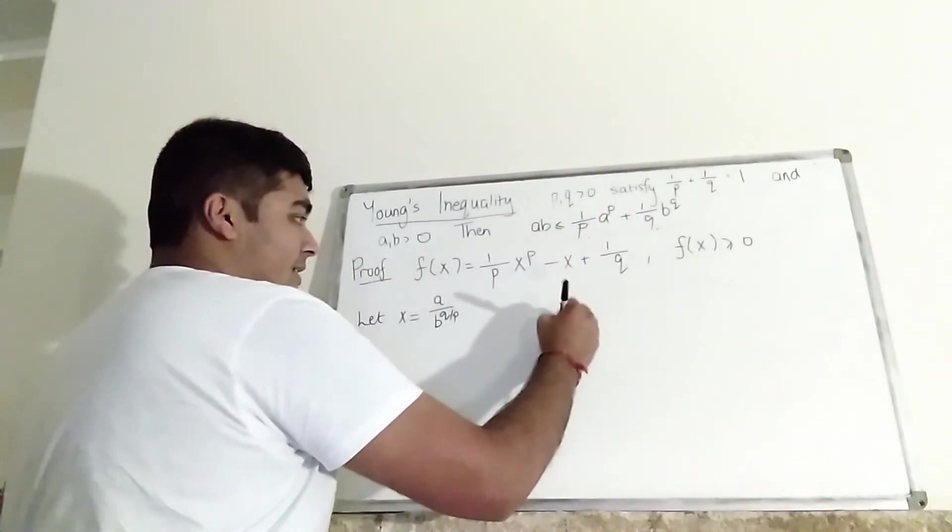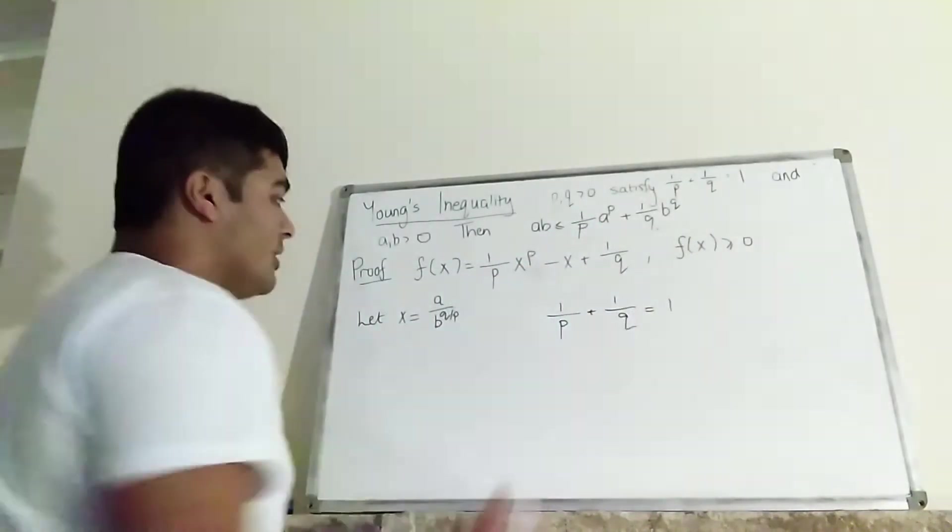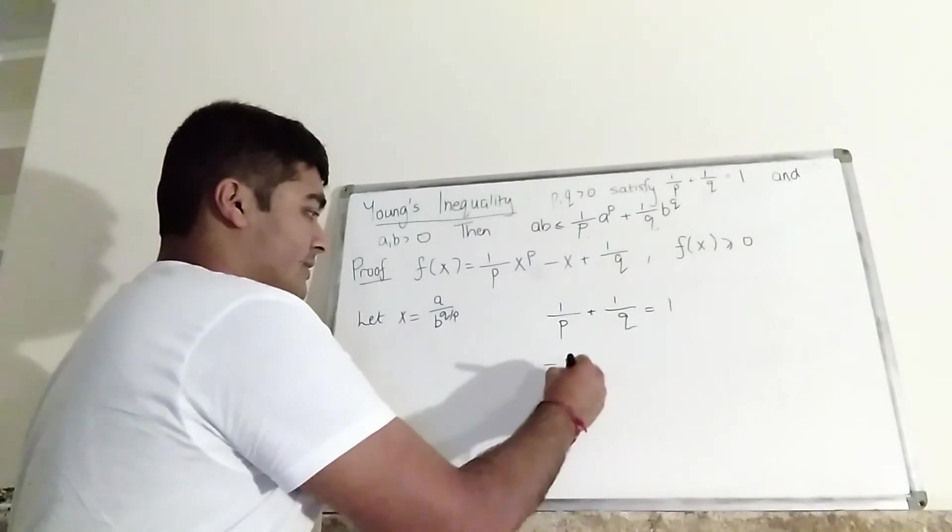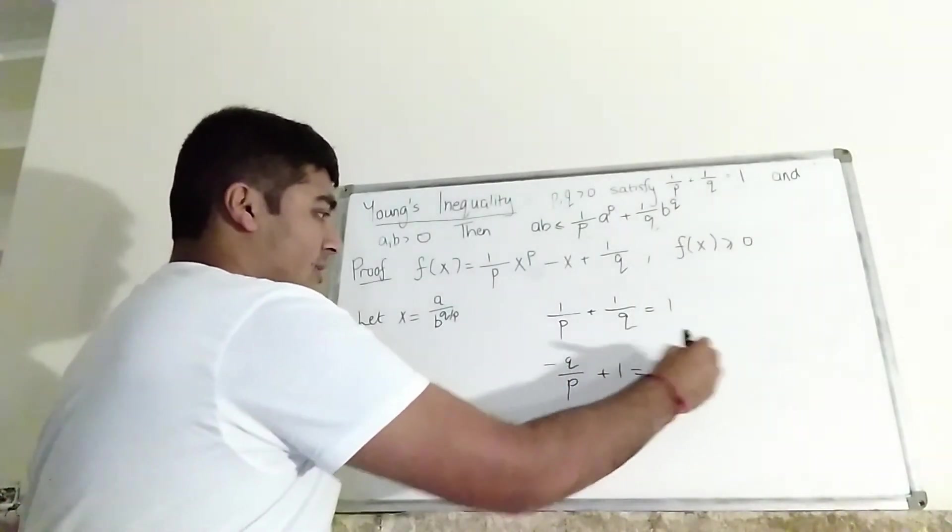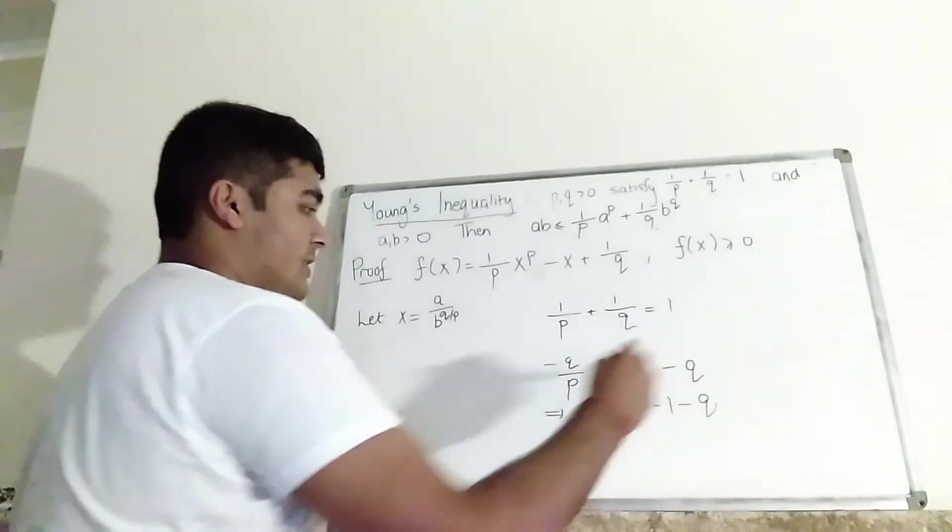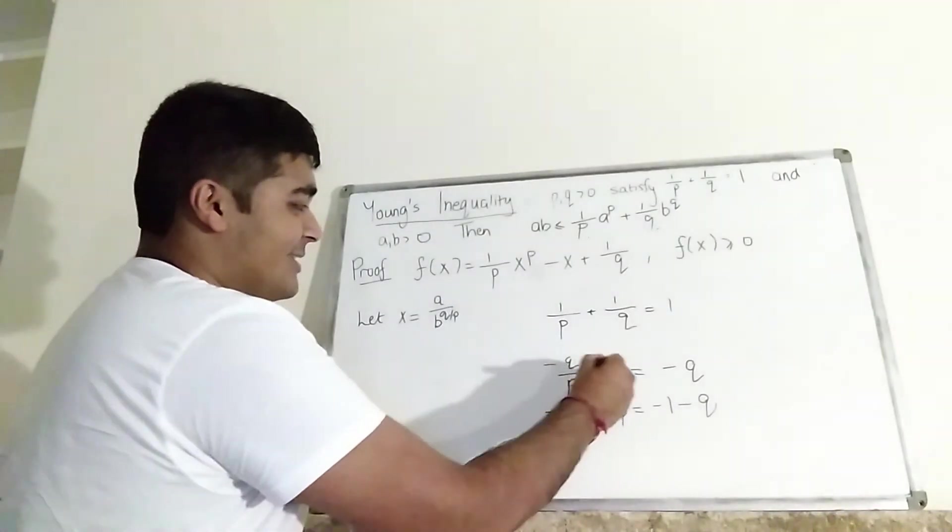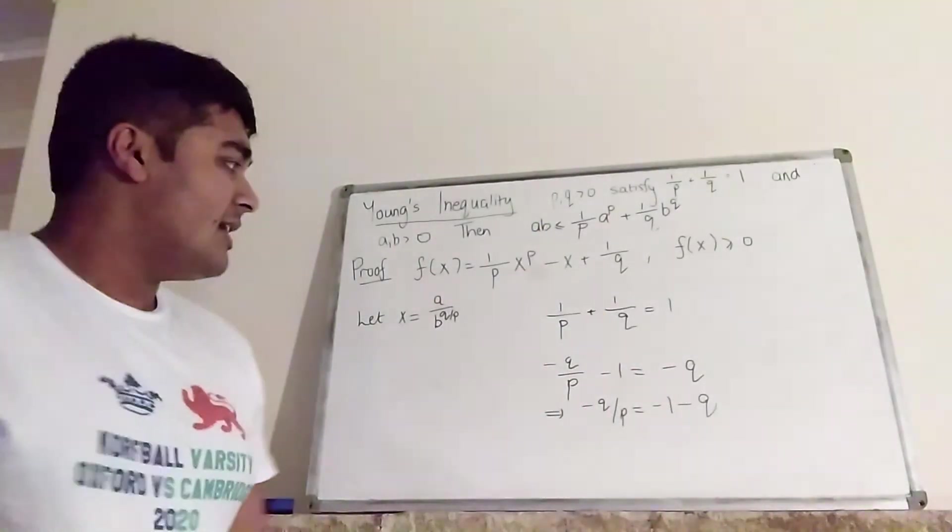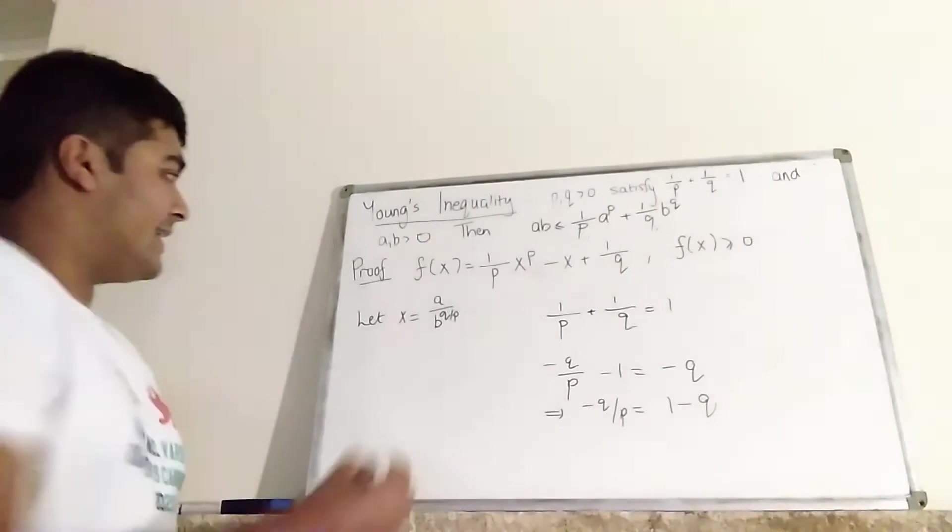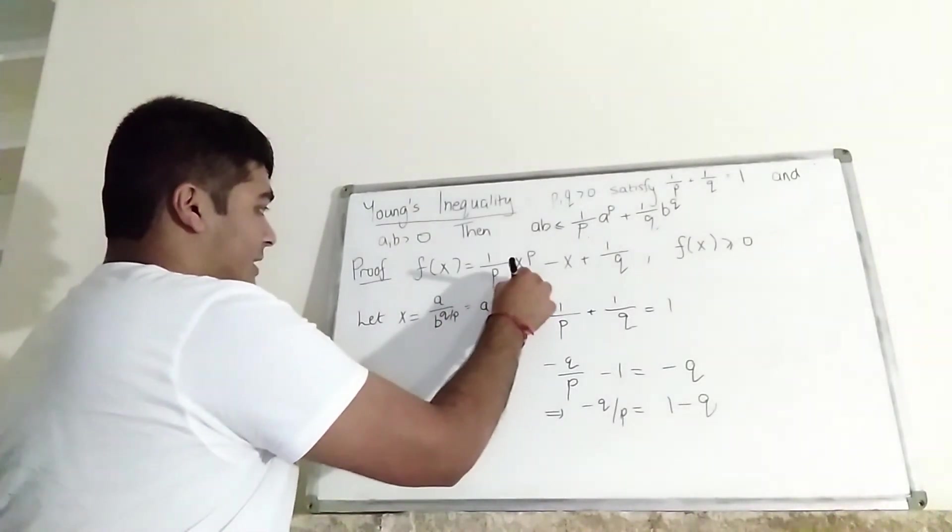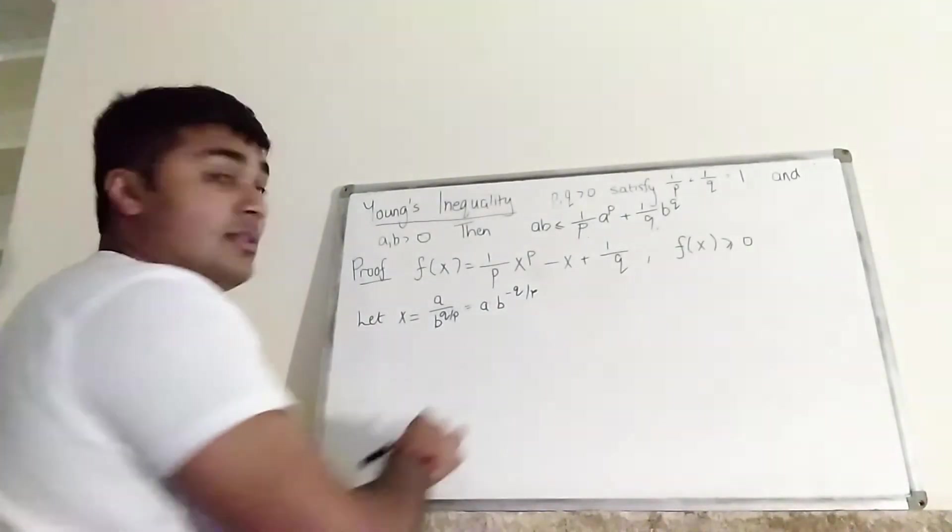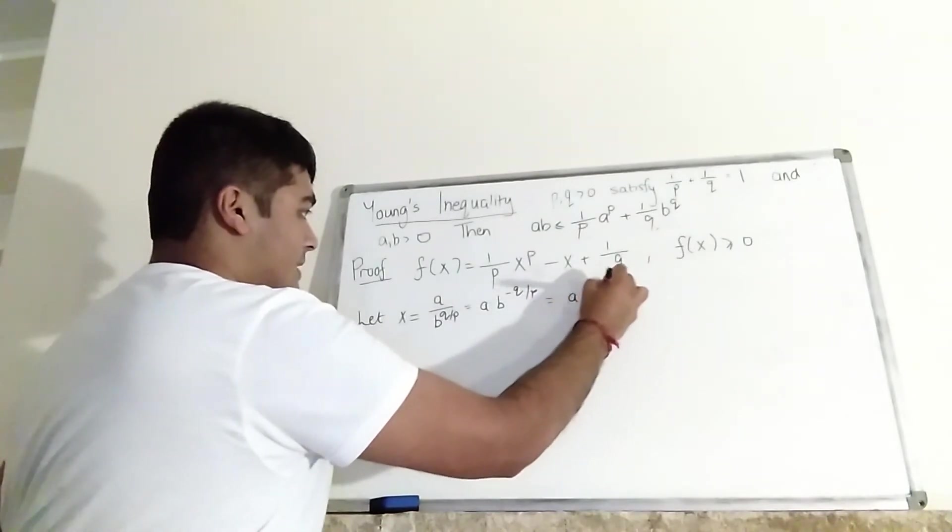Let's look back at this thing here. We know 1 over P plus 1 over Q equals 1. So what I'm going to do is multiply through by minus Q. So I get minus Q over P plus minus 1 is equal to minus Q. So that means that minus Q over P is equal to minus 1 minus Q. Sorry, this is supposed to be minus on there because I'm multiplying through by minus Q. So then if I add 1 to both sides, I get that minus Q over P is 1 minus Q. OK, now this thing here is A times B to the minus Q over P. And because of what I've just sort of derived, I can write this as A times B to the 1 minus Q. A times B to the 1 minus Q.